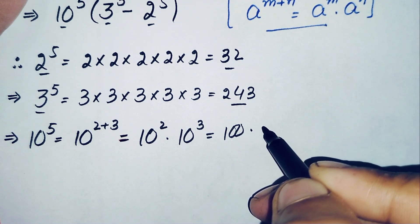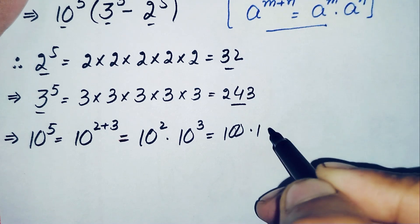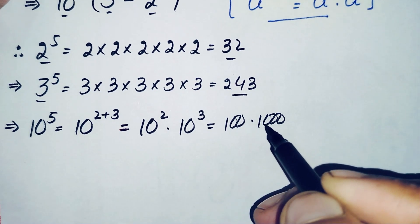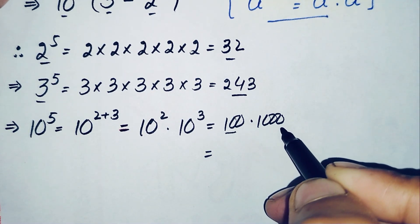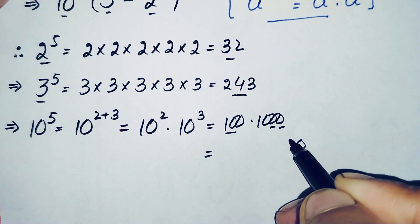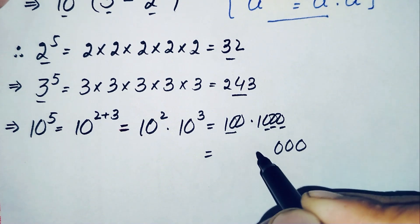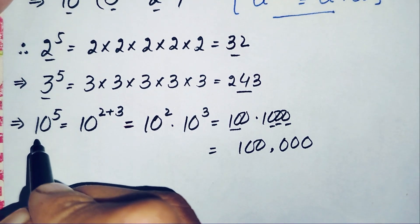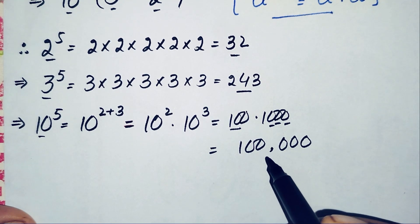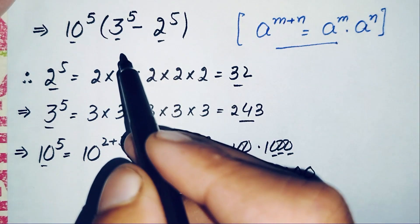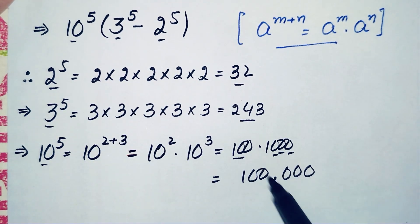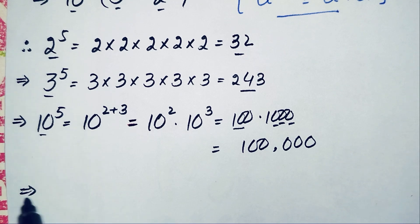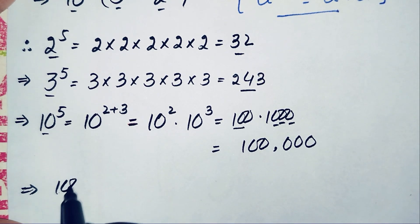Multiplying 100 times 1000 gives 100,000. So the value of 10 raised to power 5 is 100,000. We now replace the three computed values — 10 raised to power 5 is 100,000, 3 raised to power 5 is 243 — in our expression, which becomes 100,000 times open bracket 243 minus 32 close bracket.